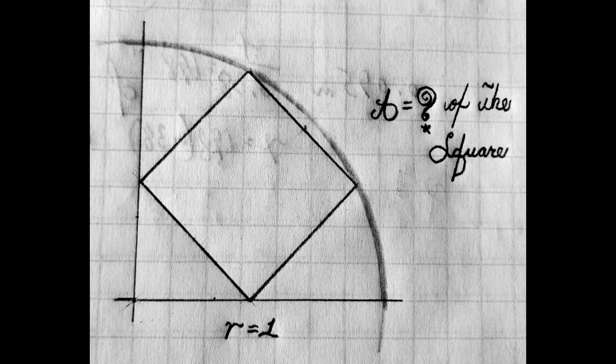We have a square inscribed in a quarter quadrant of a circle. The radius of that circle is equal to one. What is the area of the square?